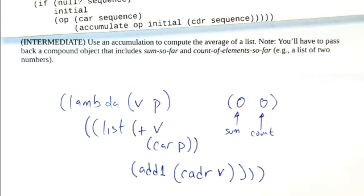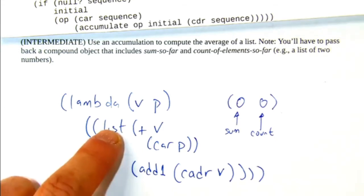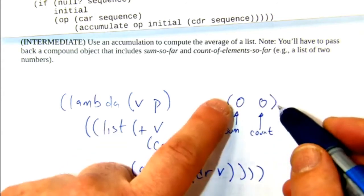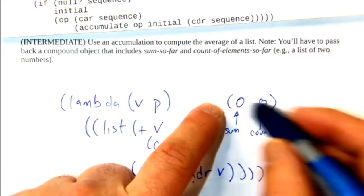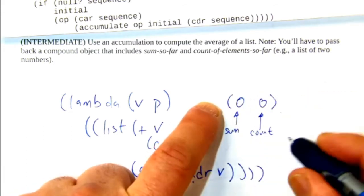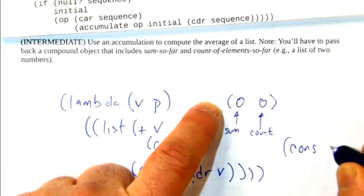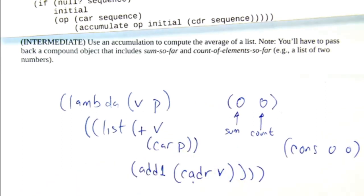Jennifer asks, would it be easier to use cons instead of list? That would be fine. You could use cons here. Then you'd use cdr there. The only difference is you would have to cons together the two zeros for the initial case because they wouldn't be a list. They'd be a cons cell. In general, as a style standpoint, if you're making a compound object with two things, it's still stylistically better to make it into a list. That's it. See you guys on Friday.